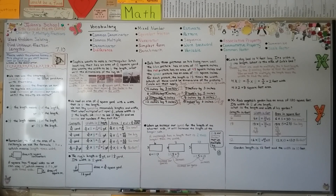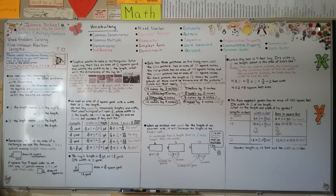Be very careful with scaling factors. If it says three-fourths the size, we multiply by three-fourths. If it says one-and-a-half times the size, we multiply by one-and-a-half. That's it for chapter seven — we're moving on to chapter eight, which is all about dividing fractions. I hope to see you there. Stay safe and stay well. Bye!